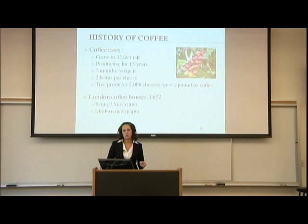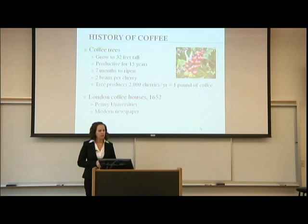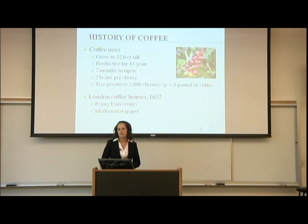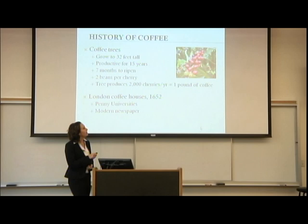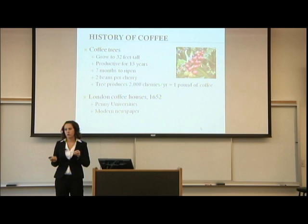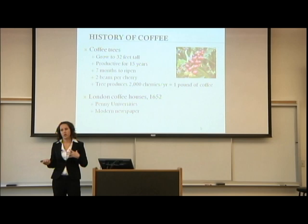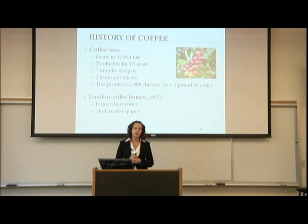Coffee trees grow to about 32 feet tall but are pruned to about 6 feet for harvesting. They can be productive for 15 years, and the cherries on the trees take seven months to ripen. The darker red cherries are ready to be picked, while the greener ones are not. Some will ripen sooner than others on the same tree. There are two coffee beans in each cherry, and the tree produces about 2,000 cherries a year, equaling one pound of coffee.